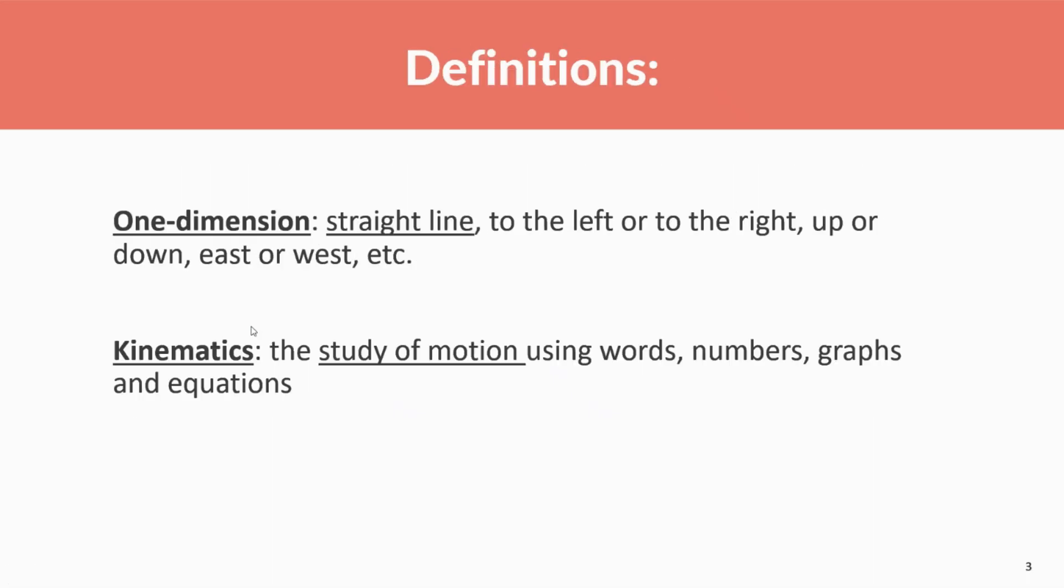Alright, so one dimension: straight line, to the left or to the right, up, down, east, west, etc. Okay, so one dimension is talking about one plane. So you could be talking about this motion from left to right. I shouldn't say motion yet. You could just be talking about left to right. That's one dimension. You could be talking about up and down. That's also one dimension, but you cannot combine the two.